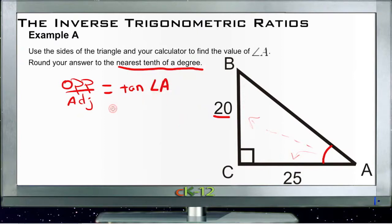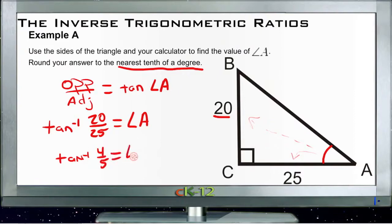Opposite over adjacent equals the tangent of angle A, and we're looking for angle A. So we need to get rid of the tangent on this side, put it on the other side, and use that tangent negative 1. The inverse tangent of 20 over 25 will equal angle A. 20/25 reduces to 4/5, so the inverse tangent of 4/5 will be equal to our missing angle.